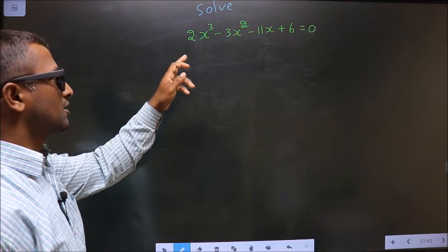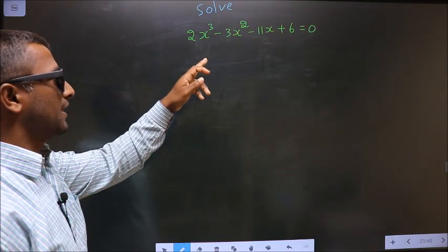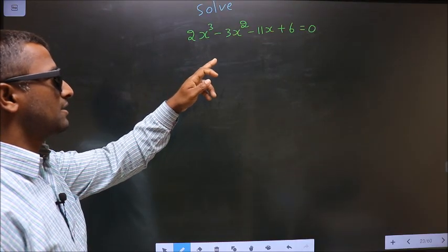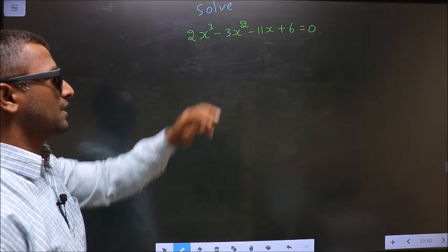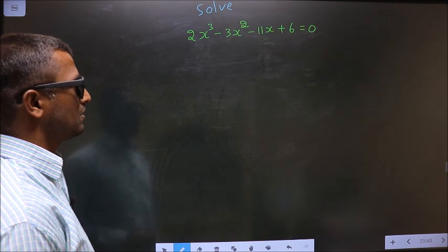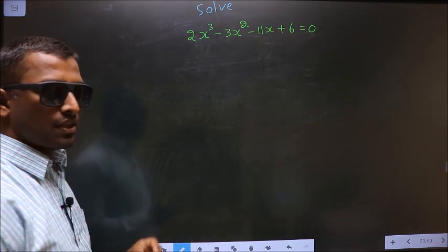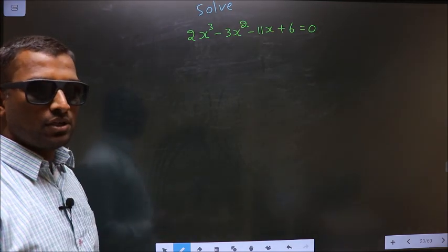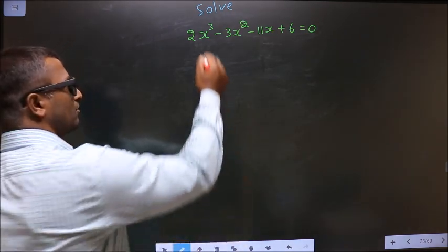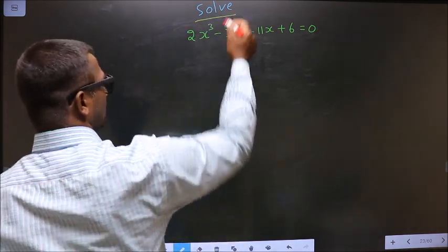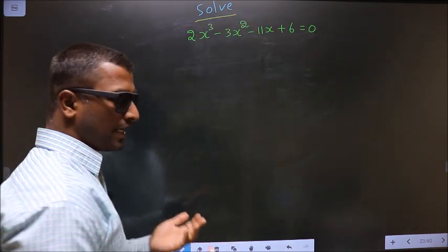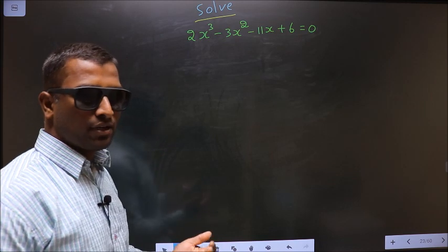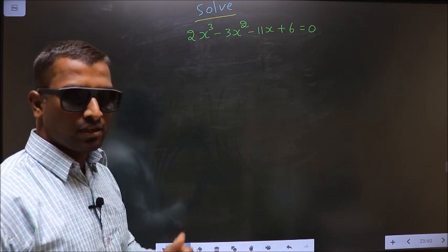Solve 2x³ - 3x² - 11x + 6 = 0. They told you to solve, so you should find the values for x.